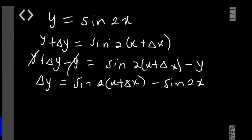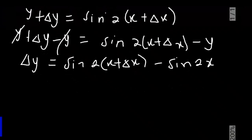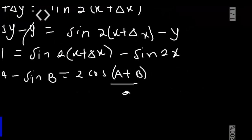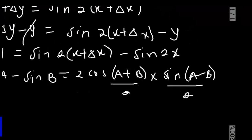So from here, since we are looking for change in y over change in x, we are going to use this trigonometric identity that says sin A minus sin B is equal to 2 cos((A+B)/2) times sin((A-B)/2). This multiplication sign here can be replaced with a dot.